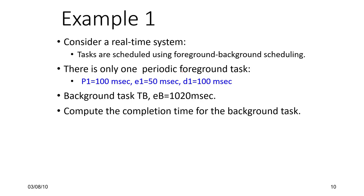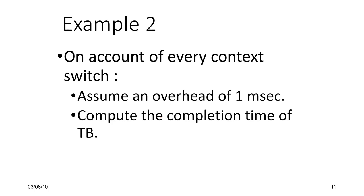We can now work through two examples. First, given a foreground task with P=100ms, E=50ms, D=100ms, and a single background task taking 1020 milliseconds, what is its completion time? Second, what is its completion time assuming an overhead of one millisecond for context switching?